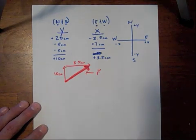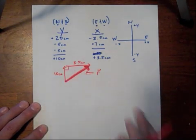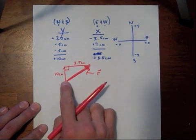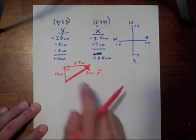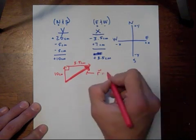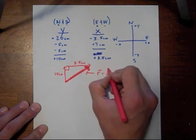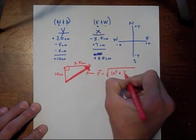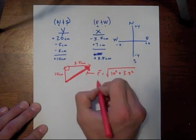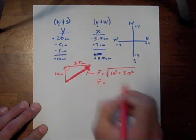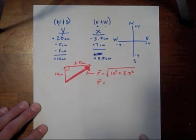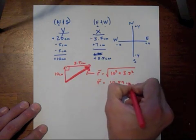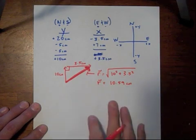We know that the north direction is at a right angle to the east direction, so we have a right triangle, and we know two of the sides we're looking for the hypotenuse. So, to solve for our resultant vector, we're going to use Pythagoras' theorem. So it's going to be 10 squared plus 3.5 squared. So calculating that out, we find our resultant vector to be 10.59 centimeters long.